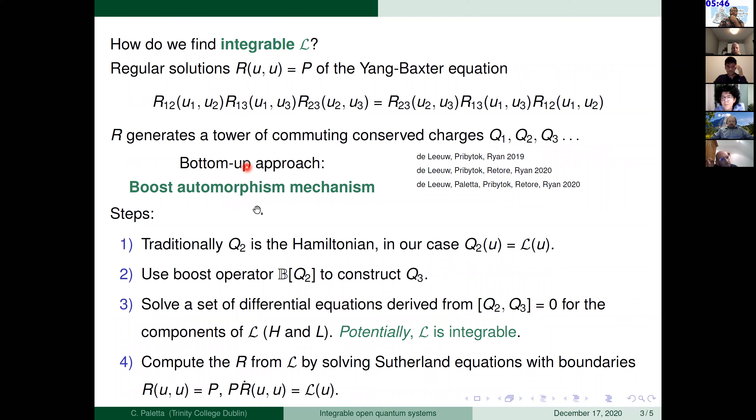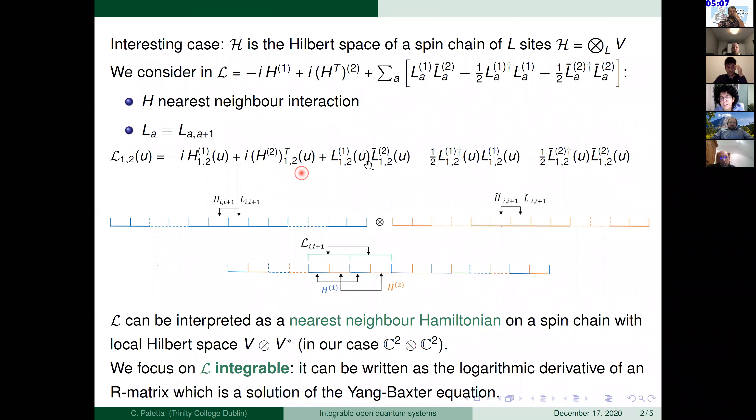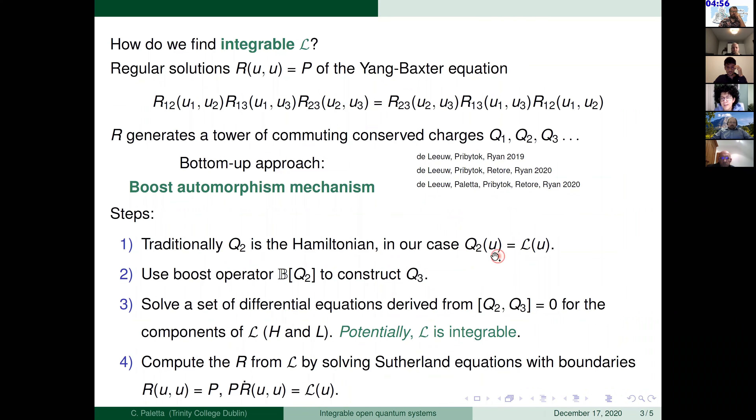Now I'm going to very briefly talk about this boost automorphism mechanism that Anton already introduced. So the question is how do we find integrable Lindblad operators? Very straightforward. It will be to start from a solution of the Yang-Baxter equation and take this R to generate the tower of commuting conservative charges Q₁, Q₂ and so on. But since now we have this super operator, a very general form of it, we can associate this super operator as the conservative charge Q₂. So having this in mind, we can start from a Hamiltonian and L to be very general. We construct this super operator L and we identify this as the conservative charge Q₂.